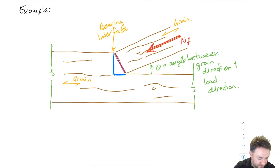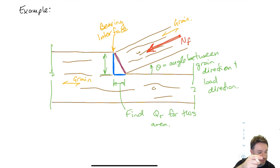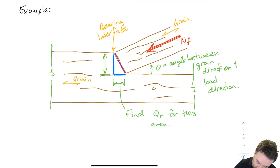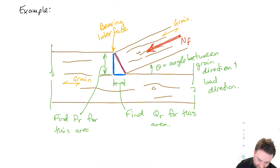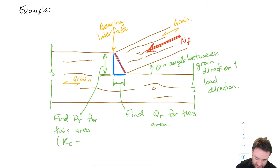The bearing surface down here gives me the length I use to find QR for that area, and the bearing surface over here — which also has a width equal to the depth of the member — is used to find PR for that area. Since we're calculating a local crushing strength and not a global column, we're going to assume that Kc, the slenderness factor, equals 1.0, meaning no buckling is considered.